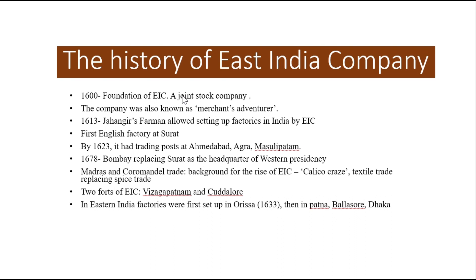There was also a shift from Surat to Bombay as the main headquarters of the western presidency. Because Surat already had other European powers present, there was a shift from Surat to Bombay in 1678, as the English were always trying to create spheres of influence at places that were safer and where they could get rid of competitors like other European powers. Bombay became the main trading hub of the East India Company.